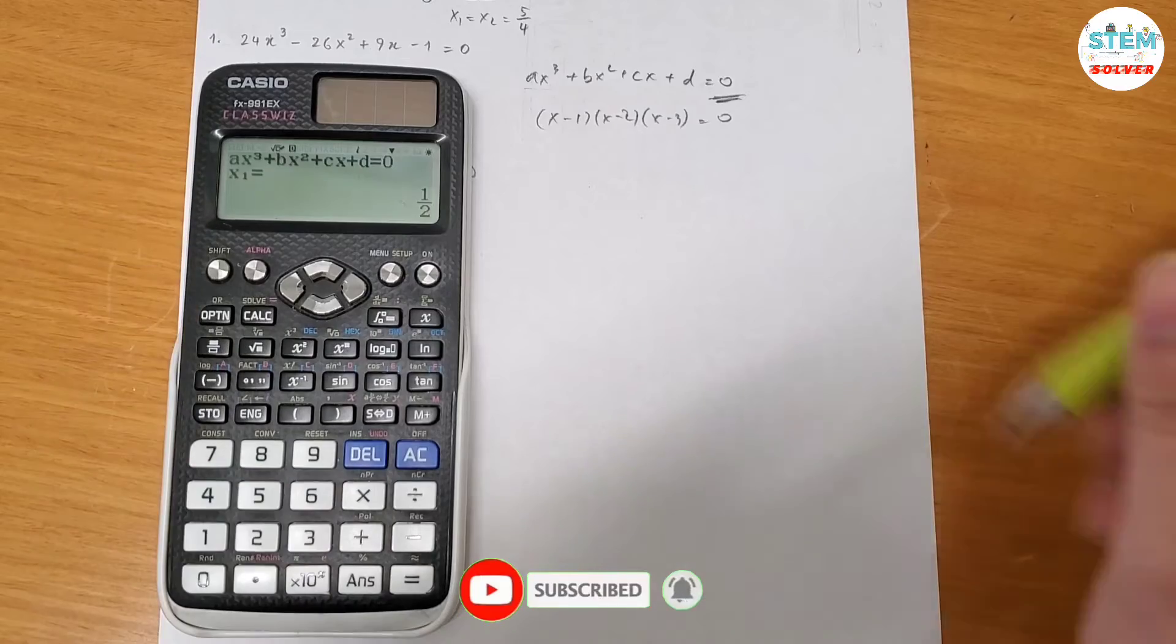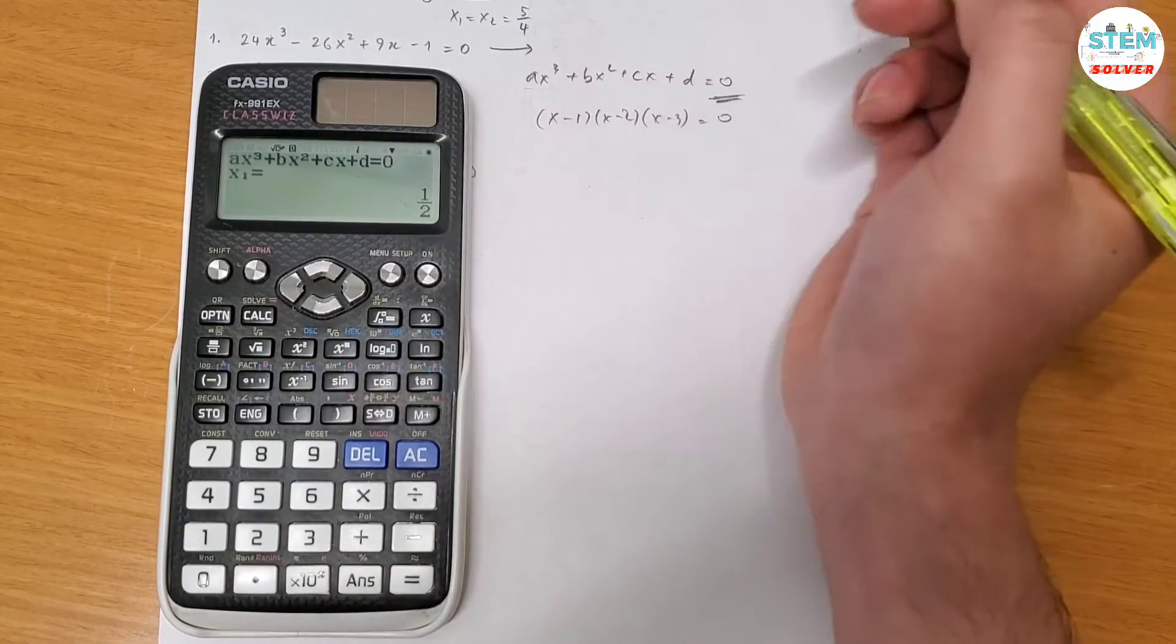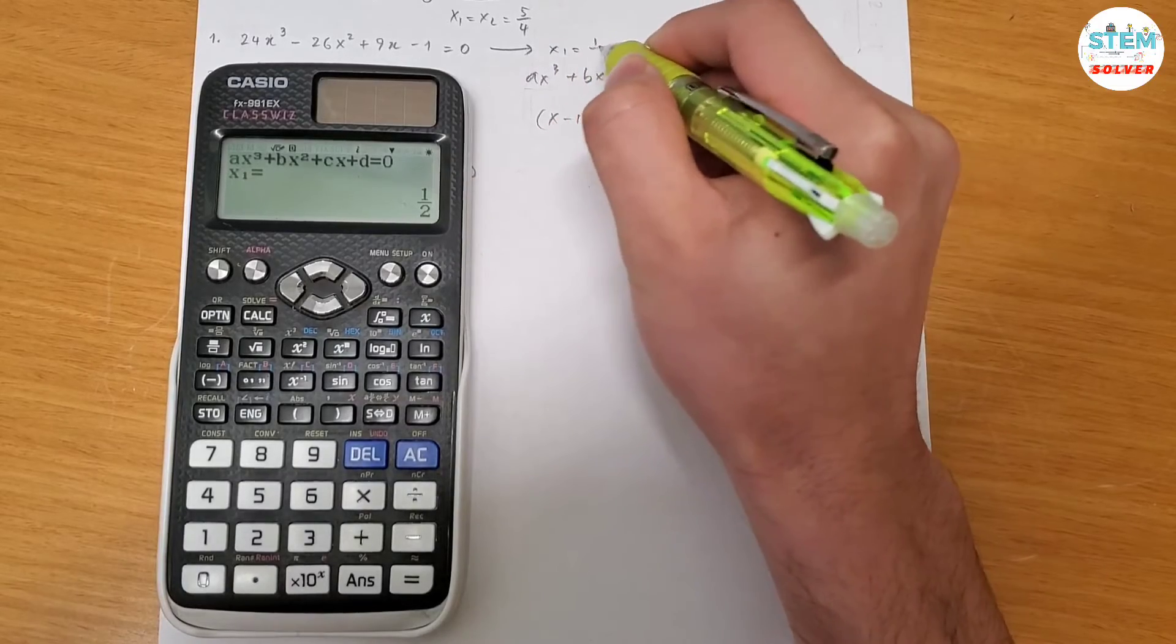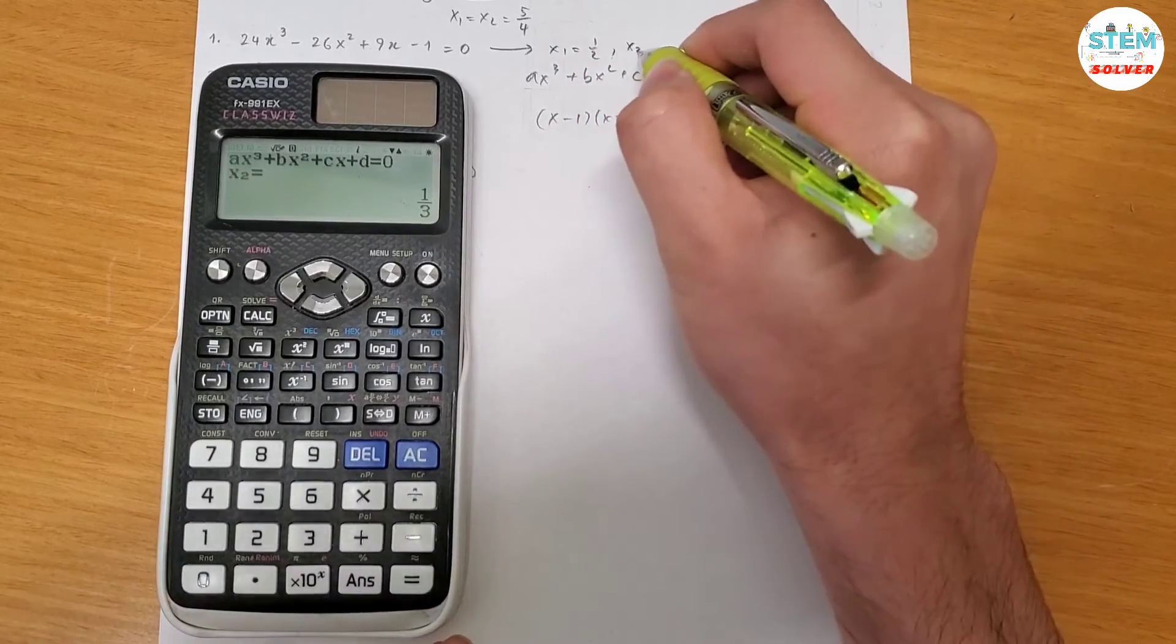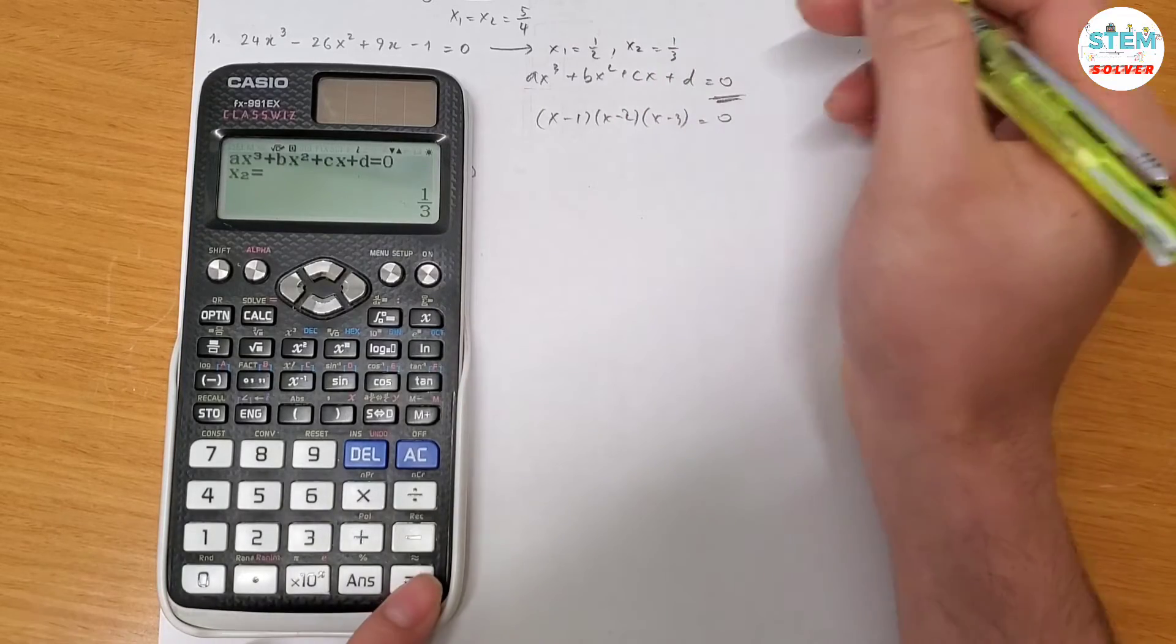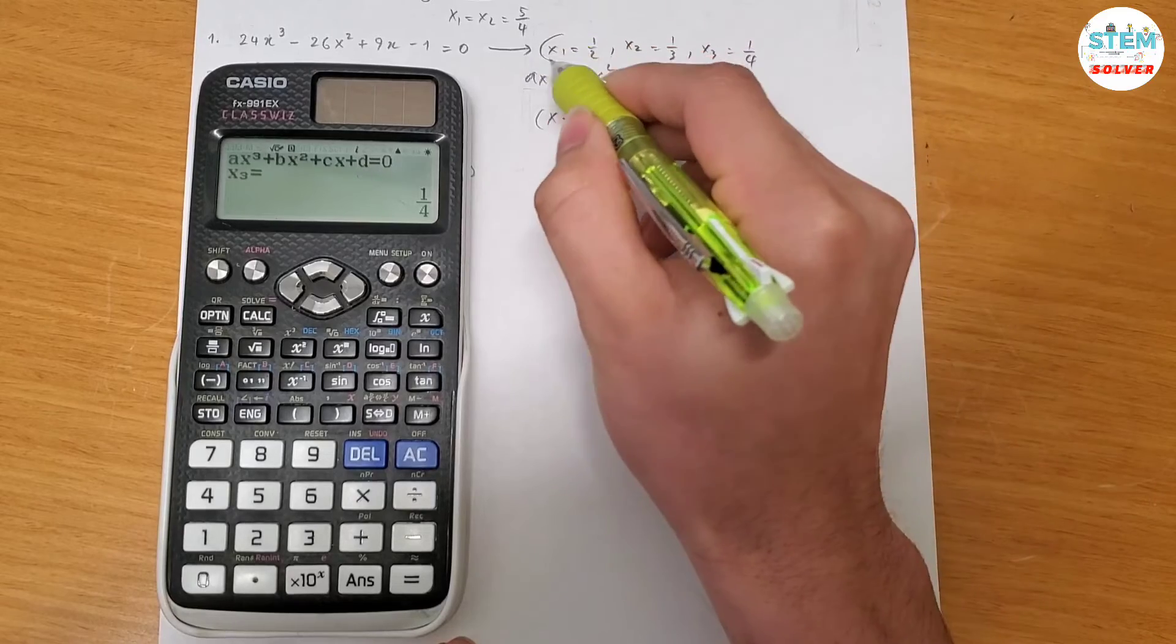Alright, so you have x1 equals 1 half, hit the equal sign again, x2 equals 1 third, hit the equal sign again, x3 equals 1 fourth. So here's your answers.